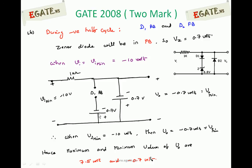Replacing the diode symbols with equivalent voltages: D1 is reverse biased so it acts as an open circuit; the Zener diode is forward biased with a 0.7V cut-in voltage (P side positive, N side negative); D2 is forward biased (P side positive, N side negative). The output voltage V0, measured across these two terminals, is -0.7V. So when Vi minimum is -10V, the output minimum is -0.7V.